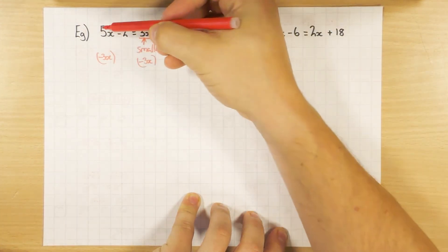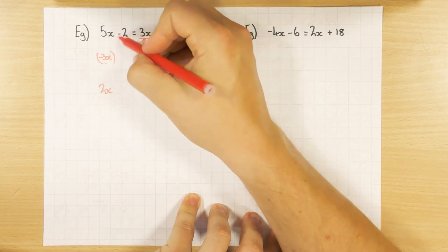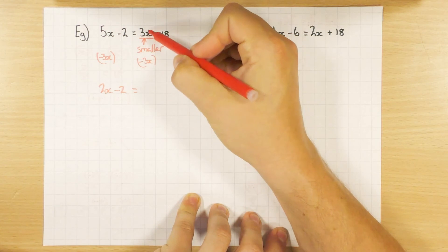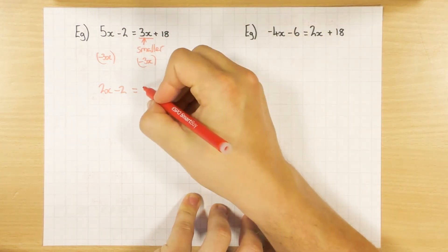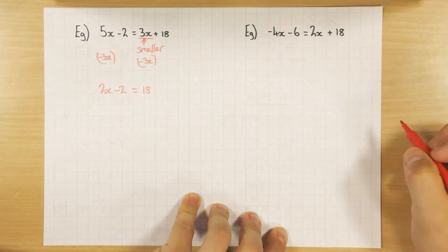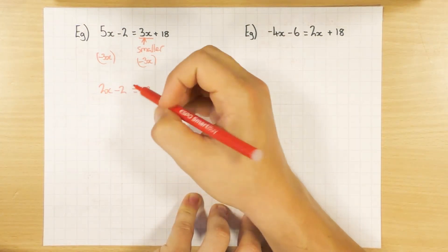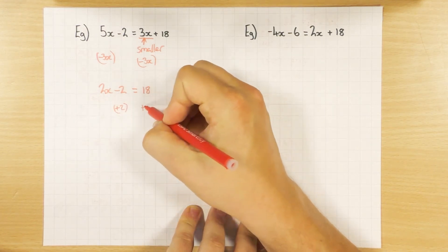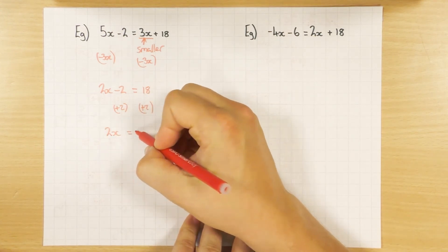So 5x minus 3x leaves me with 2x. Obviously, I've still got my minus 2. Can't forget about that. 3x minus 3x is nothing. That's why we did it. And obviously, I'm left with 18. And again, this is just like my very first example. Leave the 2x alone. Just deal with the number first. So plus 2 to both sides to get rid of it. That leaves me with 2x equals 20. Nice and easy now.